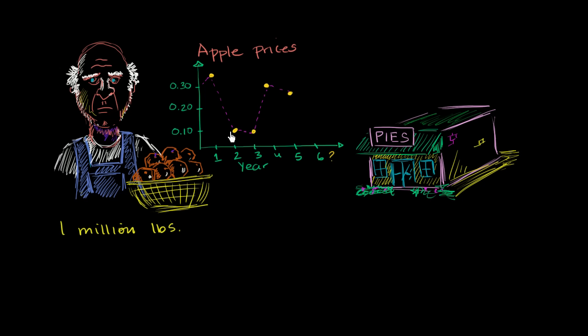On the other side of the equation, you have this pie chain right over here. They specialize in making apple pies. When the price of apples goes super high, these guys can't cover their costs and start running a loss. But when the price goes really low, they have this kind of bonanza.